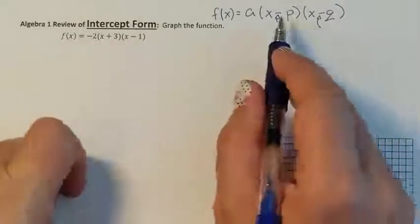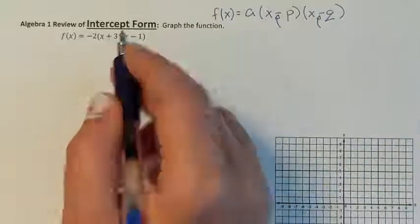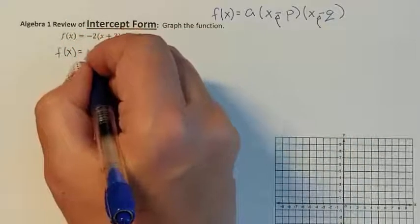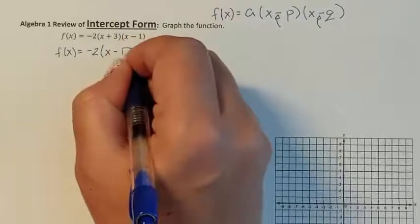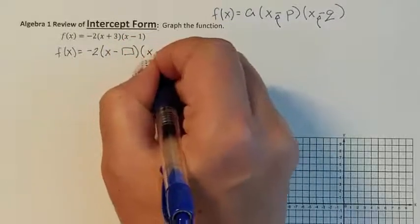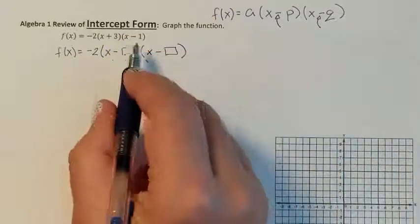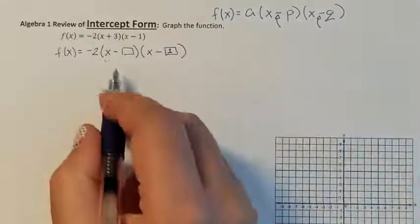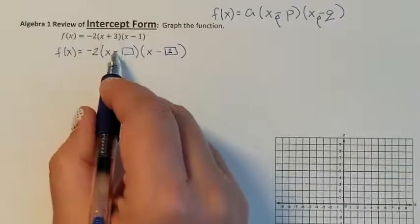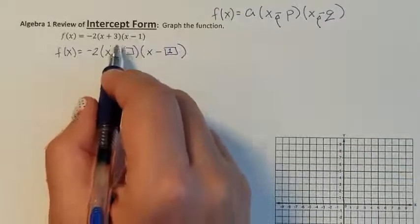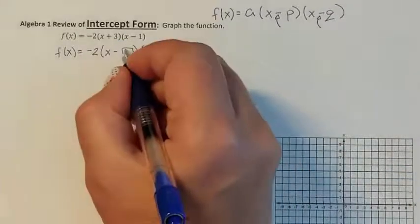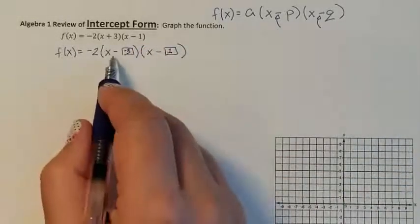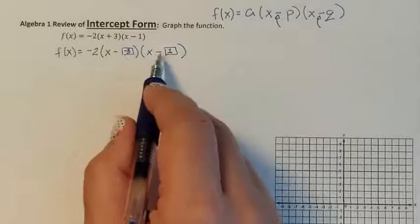This is currently not in intercept form, because this is not a subtraction. So let's rewrite it so we can see it easier. I've got negative 2. I need x minus some number, and then x minus some number. This was already a minus, so I know that inside here is a 1. This was not a minus. What would I be subtracting when I simplified it and it turned into a plus 3? This had to have been a negative 3.